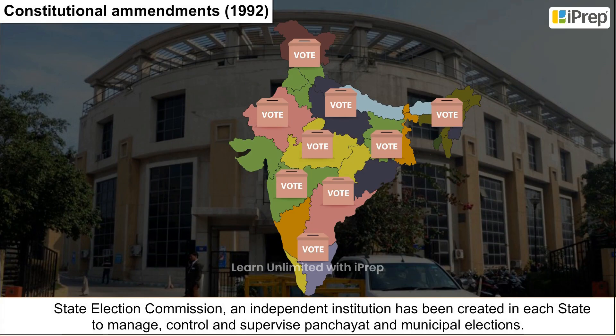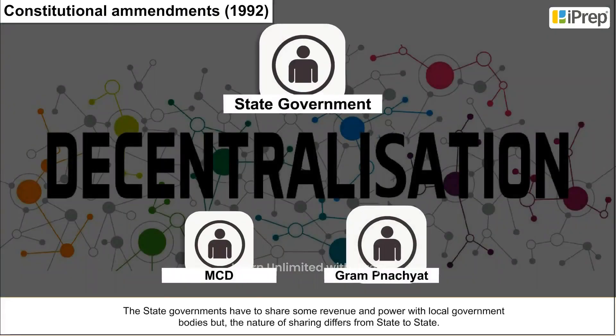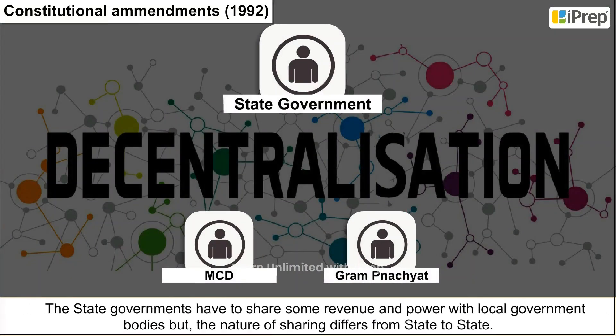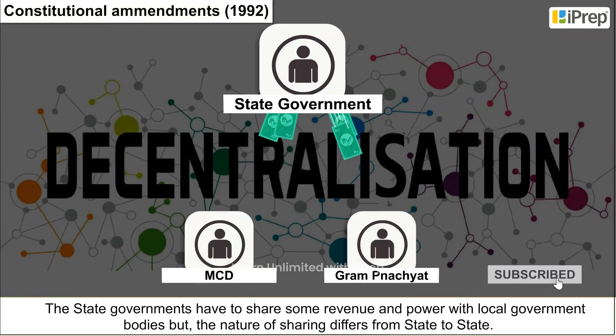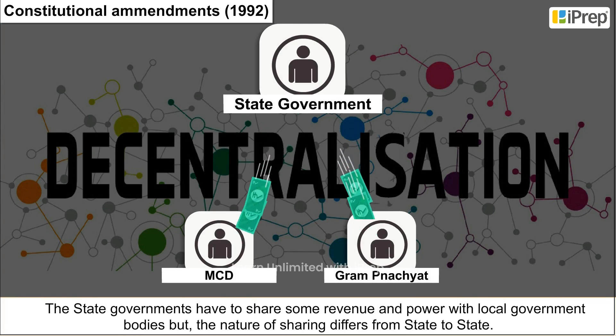The state governments have to share some revenue and power with local government bodies, but the nature of sharing differs from state to state.